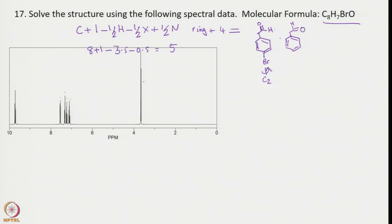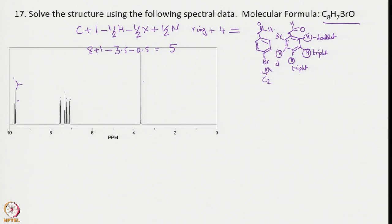For the ortho-bromo structure, all 6 hydrogen atoms are non-equivalent, giving 6 different signals. Checking the coupling patterns: one hydrogen coupled to two others shows a triplet; another hydrogen also shows a triplet; a third also shows a triplet. Two hydrogens coupled to only one neighbor each show doublets, and finally one shows a doublet. This matches the observed spectrum — two triplets and doublets — so this compound is confirmed as ortho-bromo benzaldehyde.